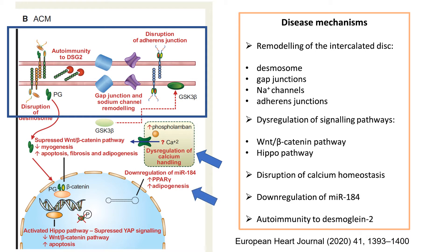The next mechanism is decreasing and down-regulation of microRNA 184, which results in adipogenesis and apoptosis. The next known mechanism is disturbance in signaling pathways, which also results in apoptosis and increased fibrosis. And the last but not least is the autoimmunity to desmosomal region, which has been described in some variants of arrhythmogenic cardiomyopathy.